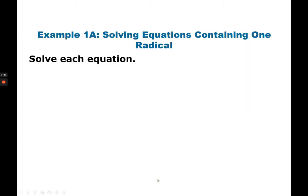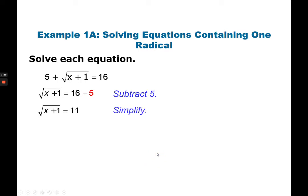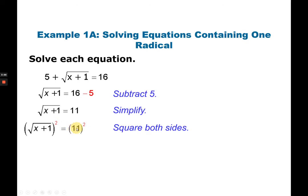Let's have the first example: solve each equation. Given is 5 plus the square root of (x plus 1) is equal to 16. First step: subtract 5 on both sides so that we can isolate x plus 1 on the left side. 5 eliminates, and you have 16 minus 5, which simplifies to 11. Now you have to get rid of your square root — you do the opposite and square both sides. After squaring, the square root and square cancel each other, but you have to perform 11 squared, which is 121. Then isolate x by subtracting 1 from both sides. x is 120.